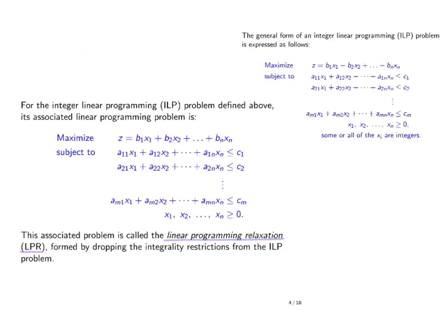If we remove the restriction that some or all of the xi are integers, then we will get a linear programming problem, which is what we have discussed in previous chapters. We say that this problem obtained by removing the integer restriction is the linear programming relaxation to the integer programming problem, or the so-called LP relaxation.